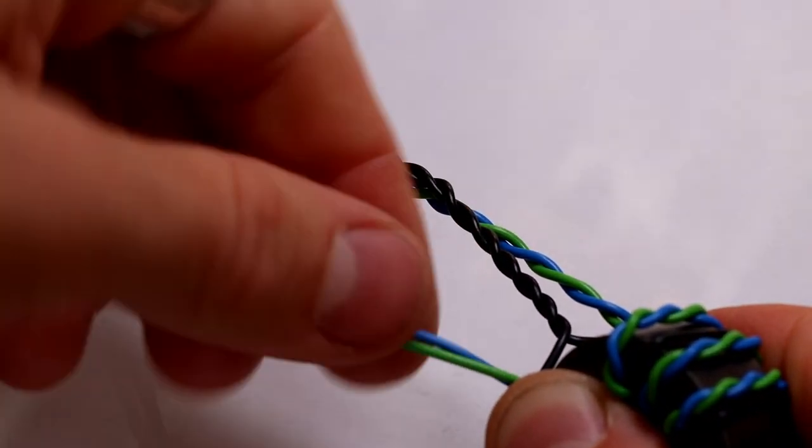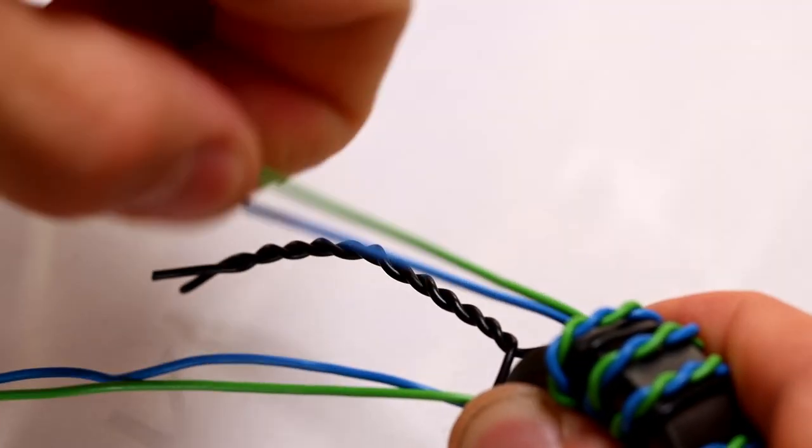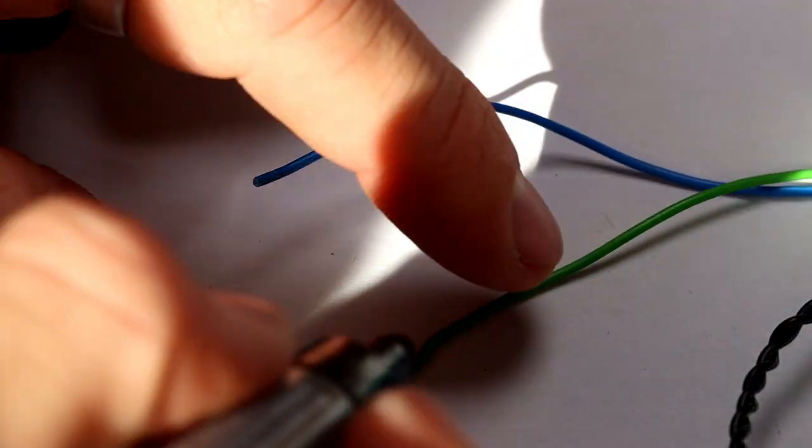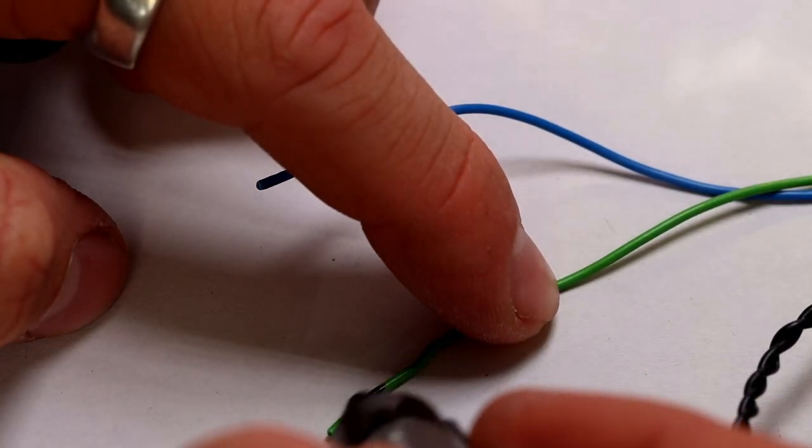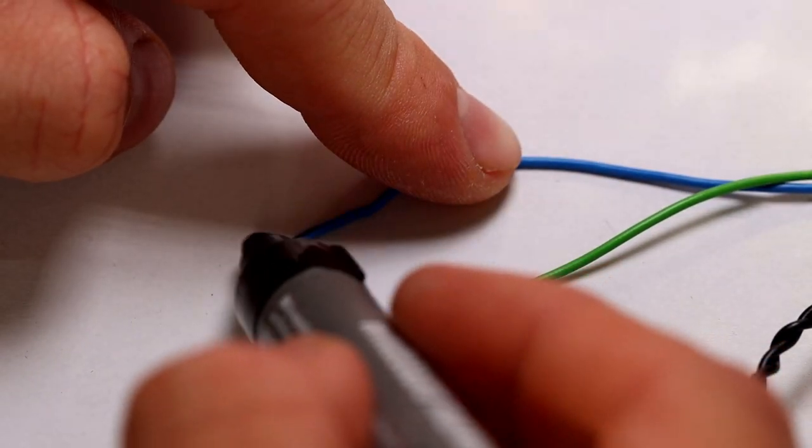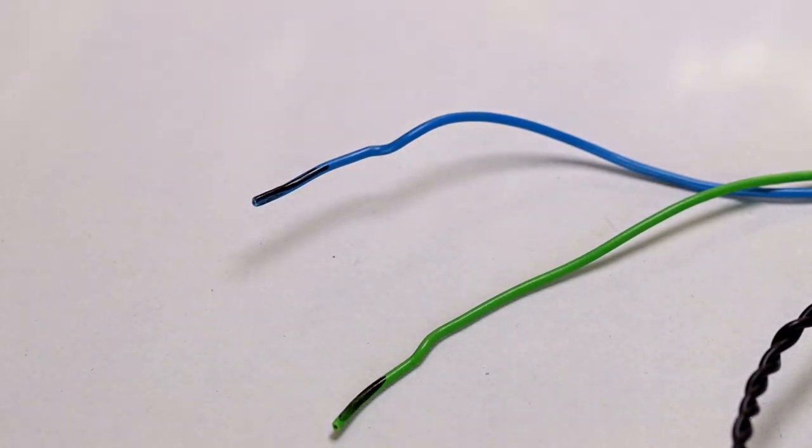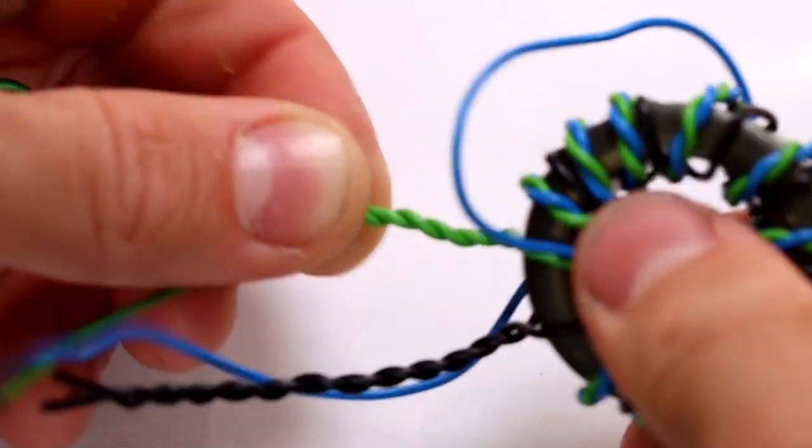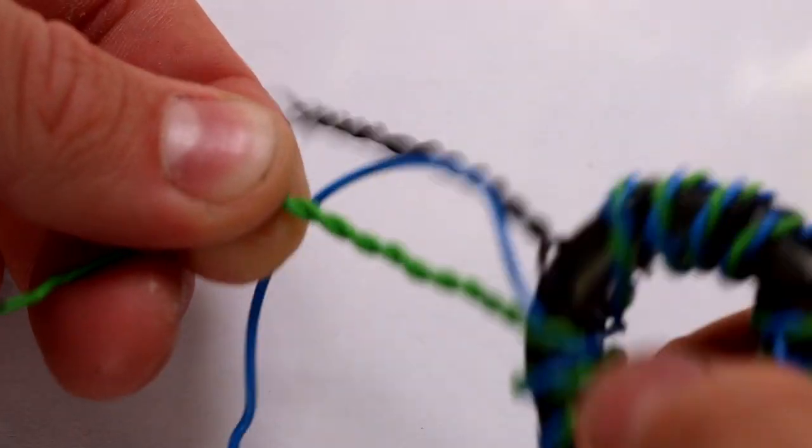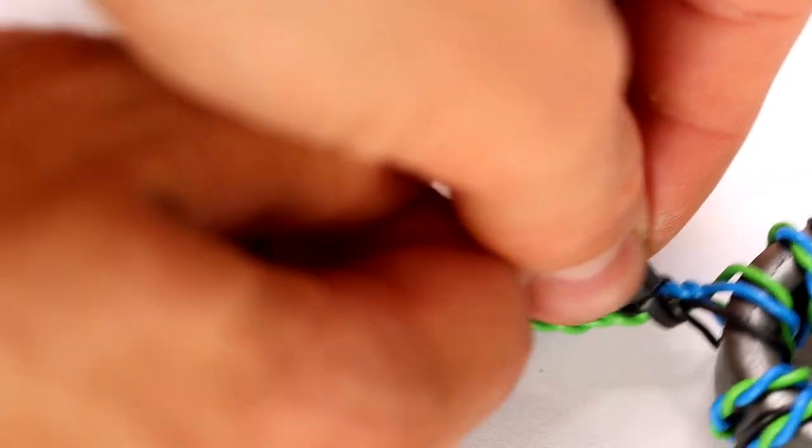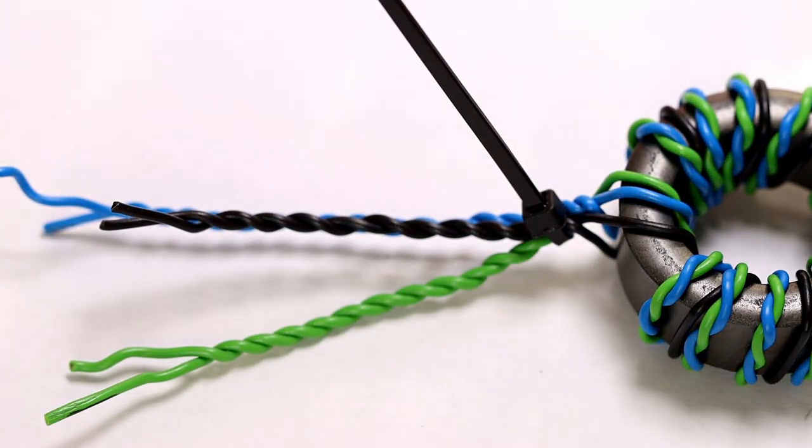When the windings are done, we can now untwist the twisted cable at the open ends. It is best to mark the two ends of one side. This will make it easier for you to connect it to the half bridge. Now we twist the cables of the same color. Tie all cables together. And done!